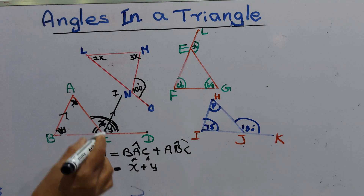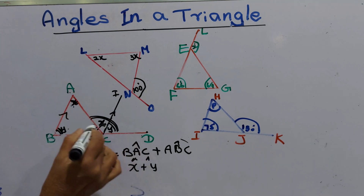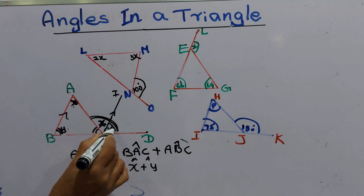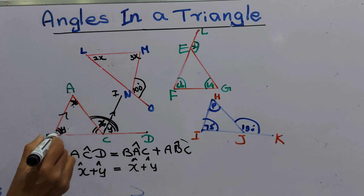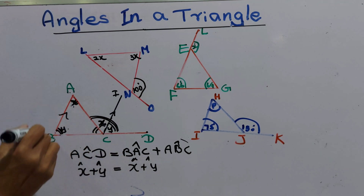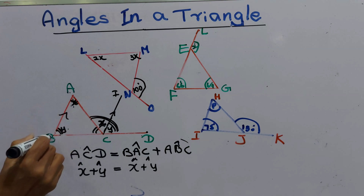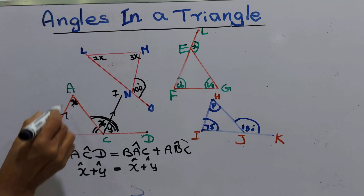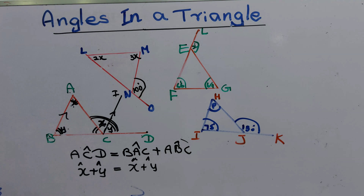I shall explain again. This is the ACD exterior angle. This exterior angle equals to angle A plus angle B — the opposite interior angles.